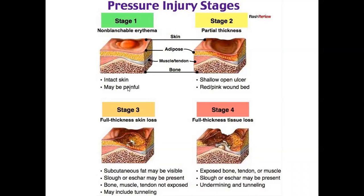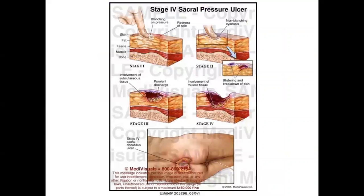Looking at another picture of stage 1: you can see blanching on pressure. The layers shown are the outer layer of skin, adipose tissue or fat, fascia, muscle layer, and bones. In stage 1, the skin is intact, but you can see redness on the skin — a redness area on the skin.